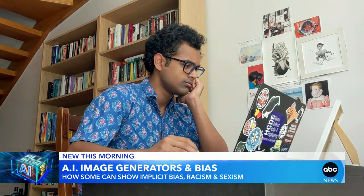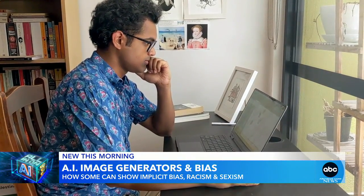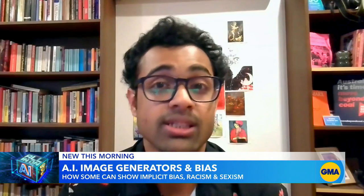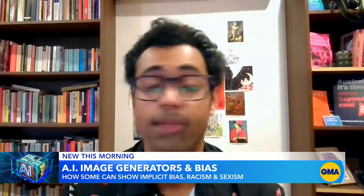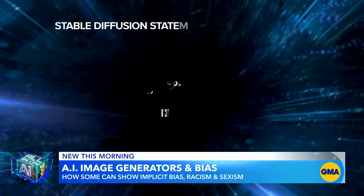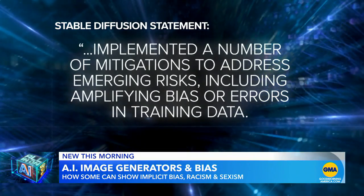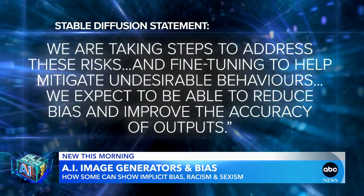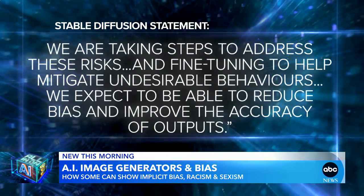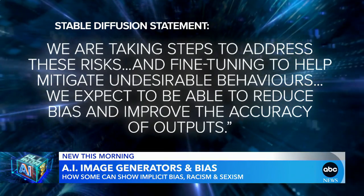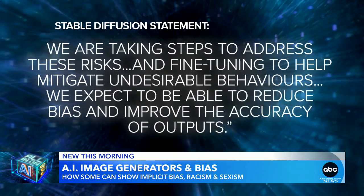Researcher Shorojit Kosh, who studied multiple AI image generators including Stable Diffusion, says: 'AI models replicate, reinforce, and amplify the biases that real people already have. It will give you answers that might be potentially racist, potentially sexist, or might just not be true.' Stable Diffusion tells ABC: 'We have implemented a number of mitigations to address emerging risks, including amplifying bias or errors in training data. We're taking steps to fine-tune and help mitigate undesirable behaviors and expect to reduce bias and improve the accuracy of outputs.'